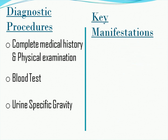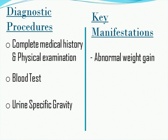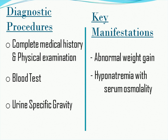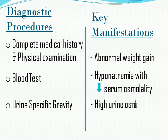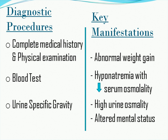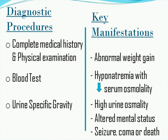Key manifestations include abnormal weight gain and hyponatremia — a decrease in serum sodium concentration with decreased serum osmolality due to excessive water in the body. High urine osmolality is also present, as the urine is concentrated because too much water is in the blood and is not excreted properly. Due to severe hyponatremia, altered mental status such as confusion, irritability, or agitation may occur. It can also lead to seizure, coma, or even death.